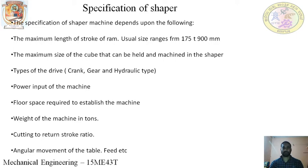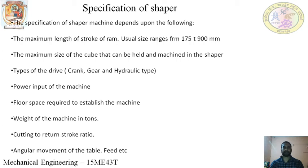If you want to increase production rate, you have to achieve the return stroke in much less time compared to the forward stroke. This mechanism is achieved by means of the quick return motion mechanism.